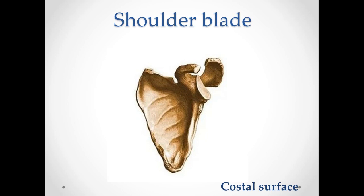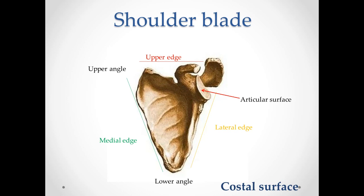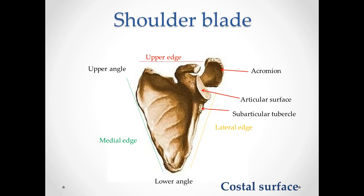Coastal surface. Here we have the same medial edge, lateral edge, lower angle, upper edge and upper angle. The articular surface, tuberculum supraglenoidalis and tuberculum infraglenoidalis, which is located below cavitas glenoidalis. And the acromion or acromial process — it is an extension of the spina scapulae. The process hangs over cavitas glenoidalis.